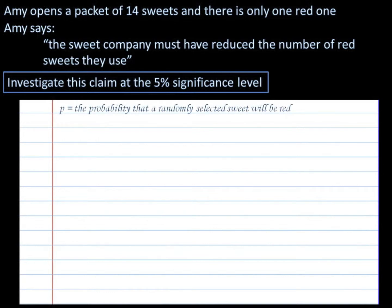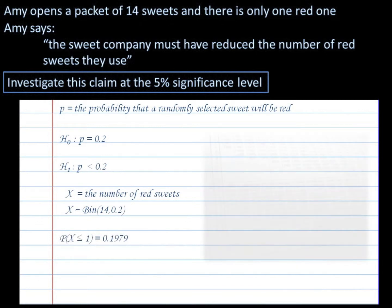P is equal to the probability that a randomly selected sweet would be red. The null hypothesis is that P equals 0.2 and the alternative hypothesis is that P is less than 0.2. X is the number of red sweets and it follows a binomial distribution.